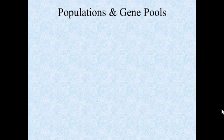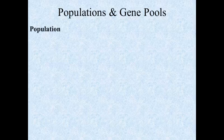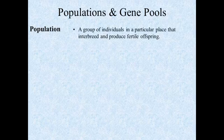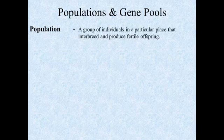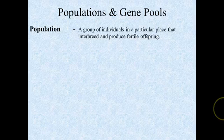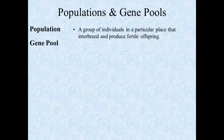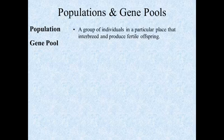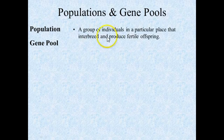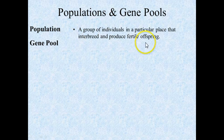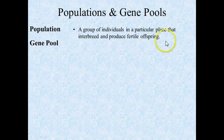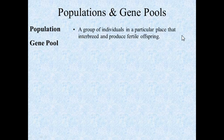The next terms to define are populations and gene pools. A population is a group of individuals in a particular place that interbreed and produce fertile offspring. One reason for specifying fertile offspring is that there are hybrids — things like horses and donkeys that can interbreed but do not produce fertile offspring. You can take a horse and a donkey, interbreed them, and produce a mule, which is a hybrid, but it is not fertile. So mules are their own population, but they're neither a horse nor a donkey because they're not fertile.